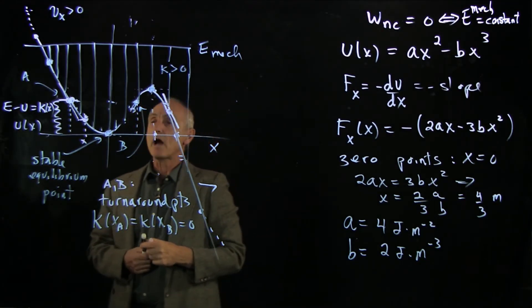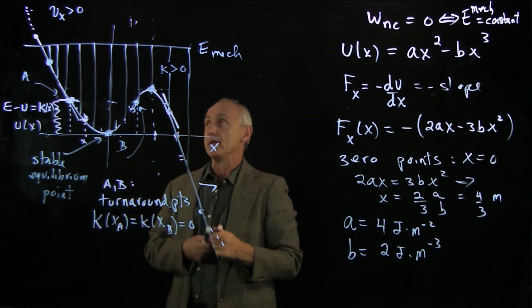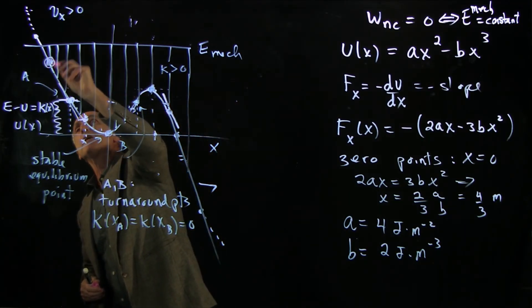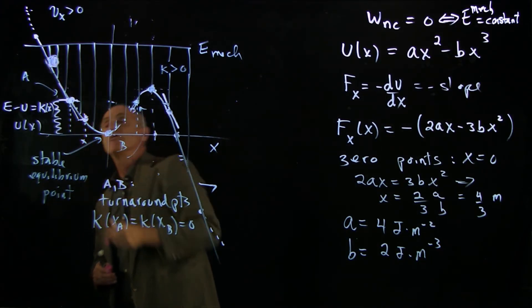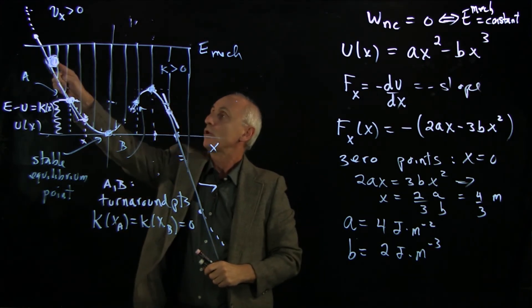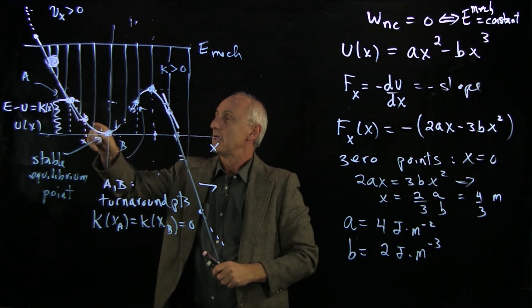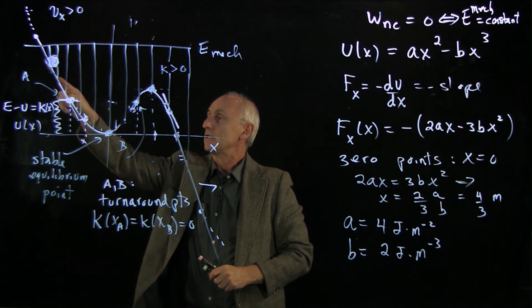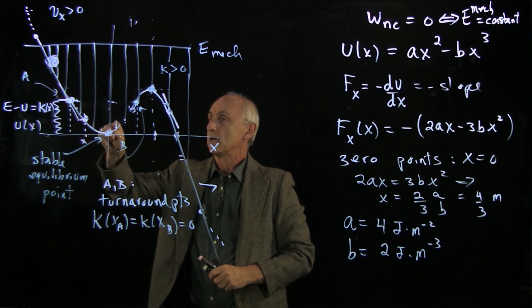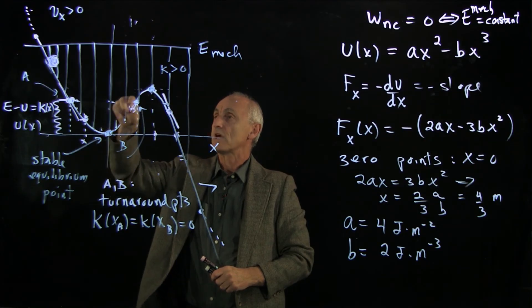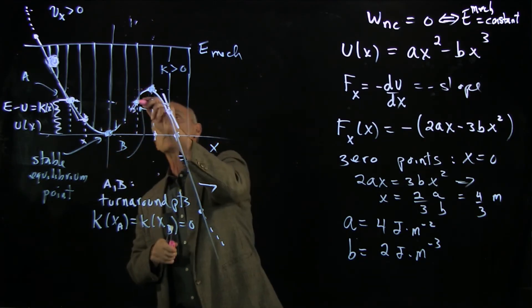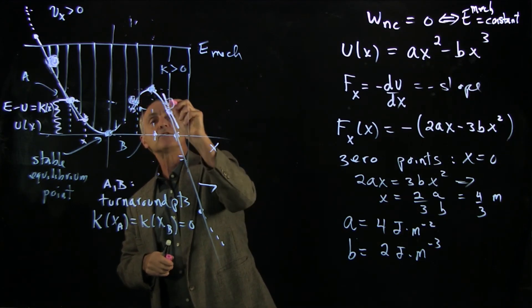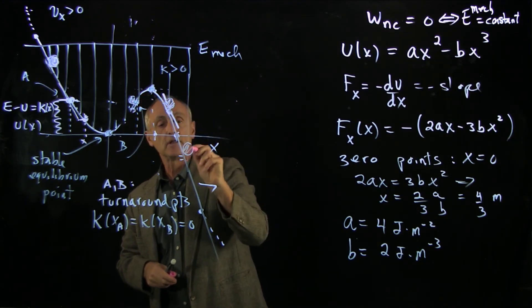So one analogy that people like to make to understand the motion is to think of a marble that's rolling down a hill. And this is just a metaphor for this potential energy function. As the marble rolls down the hill, it gains kinetic energy. It loses potential energy. It comes to maximum at the bottom of the hill. As it goes up the hill, it still has enough kinetic energy to get over the top of the hill and to start to come down the other side.